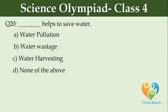Dash helps to save water. Option A: Water Pollution, Option B: Water Wastage, Option C: Water Harvesting, Option D: None of the above.